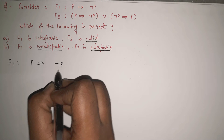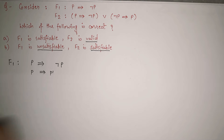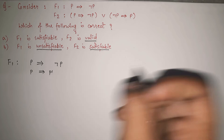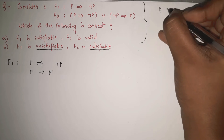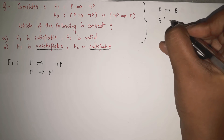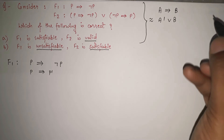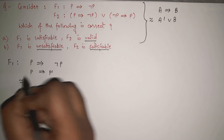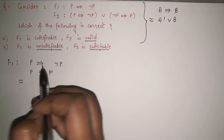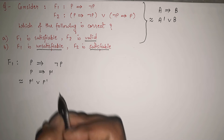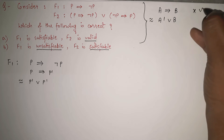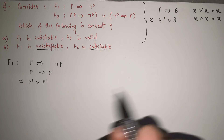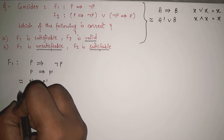We have the formula that A implies B can be written as A dash or B — these are equivalent. Similarly, P implies P dash can be written as P dash or P dash. Now whenever we have X or X, that gives X. Similarly, X and X also gives X — whenever two things are the same, we get the same result. So P dash or P dash gives P dash. I have simplified F1 such that F1 equals P dash.